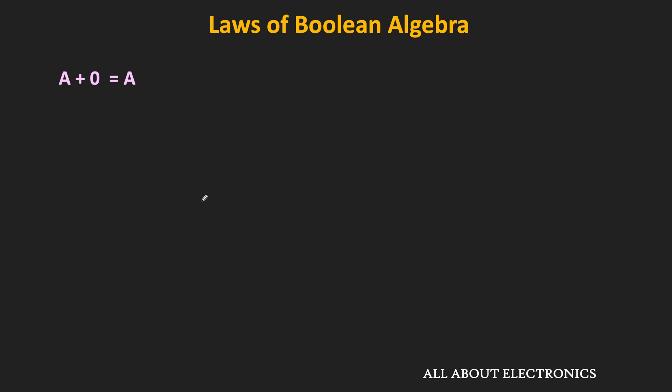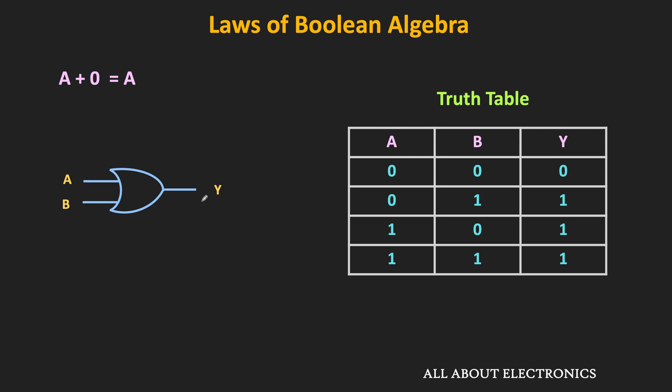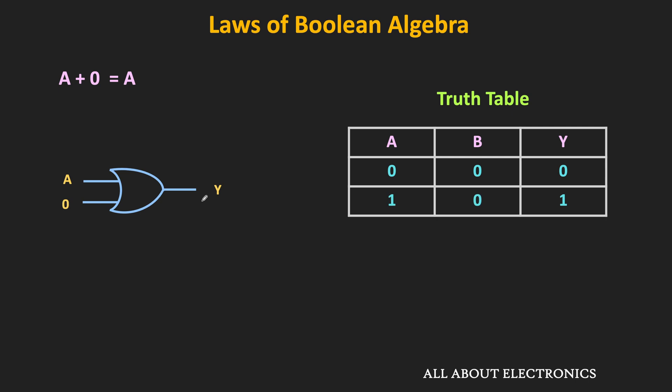Looking at the truth table of the two-input OR gate: for the OR operation, when one of the inputs is 1 the output is always 1, and when both inputs are 0, the output is 0. Here one input is always set to 0. When a is 0, both inputs are 0 so output y is 0. When a is 1, the output of the OR gate is 1. So the output y is the same as a, meaning a + 0 = a.